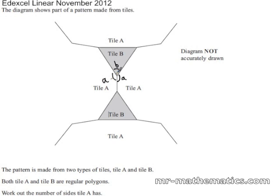So we will call tile A an interior angle of A and tile B an interior angle of B. So 2 lots of A plus B equals 360 degrees, which is the sum of the angles about a point.